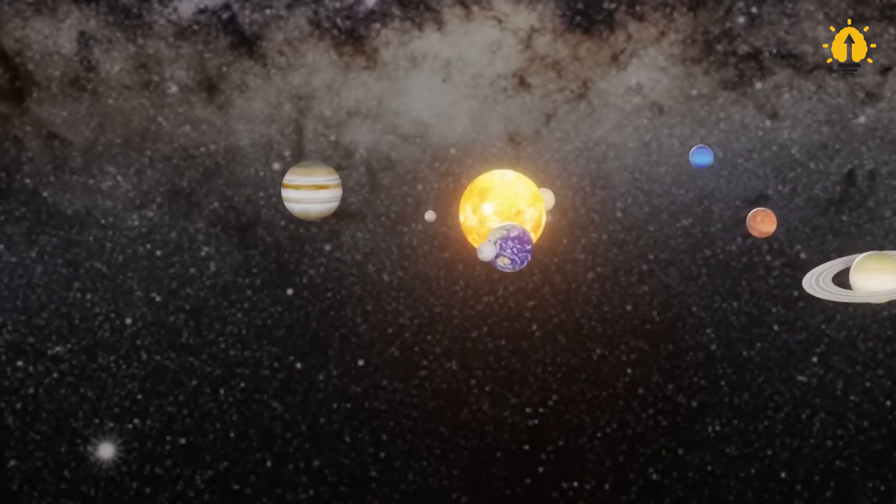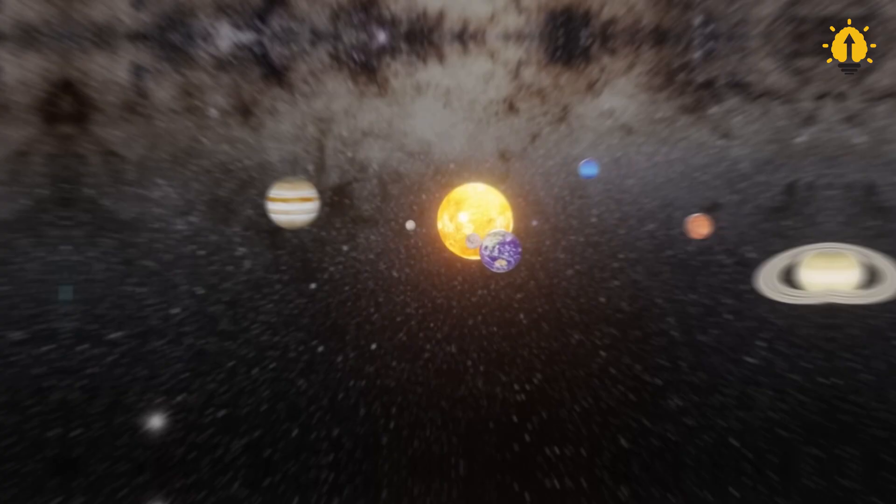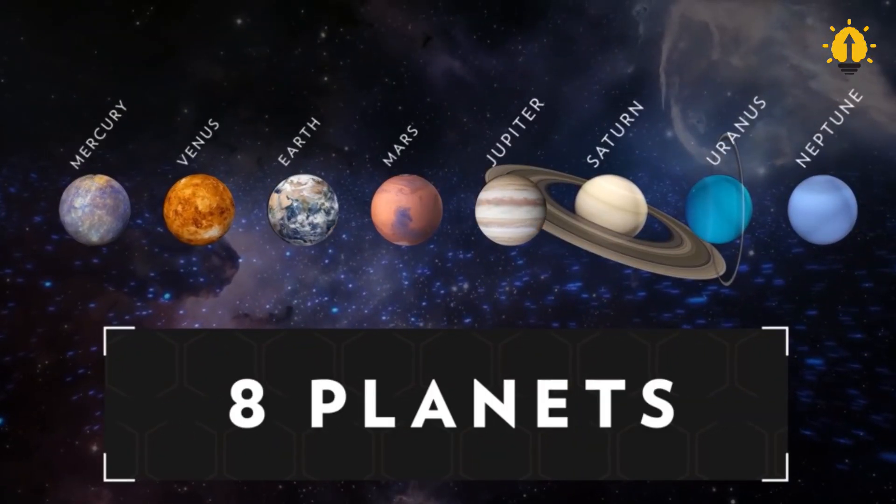At present, the official theory of astronomy states that our solar system has eight planets, excluding the demoted dwarf planet Pluto.